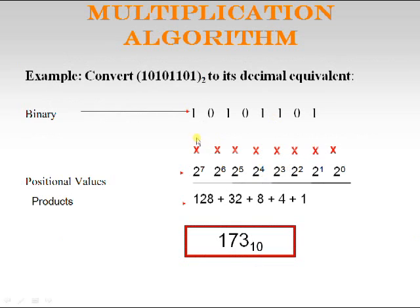Let us see one more example: convert a binary number to its decimal equivalent. Multiply it with positional values 2^0, 2^1 up to 2^7, and you will get the equivalent decimal number, which is 173.